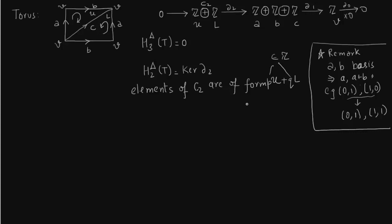So we need to find the kernel of delta_2. We have to apply delta_2 to these elements. I'm just writing delta - that is as good as delta_2. So we apply delta_2 to elements of C_2. What is delta_2 of U?